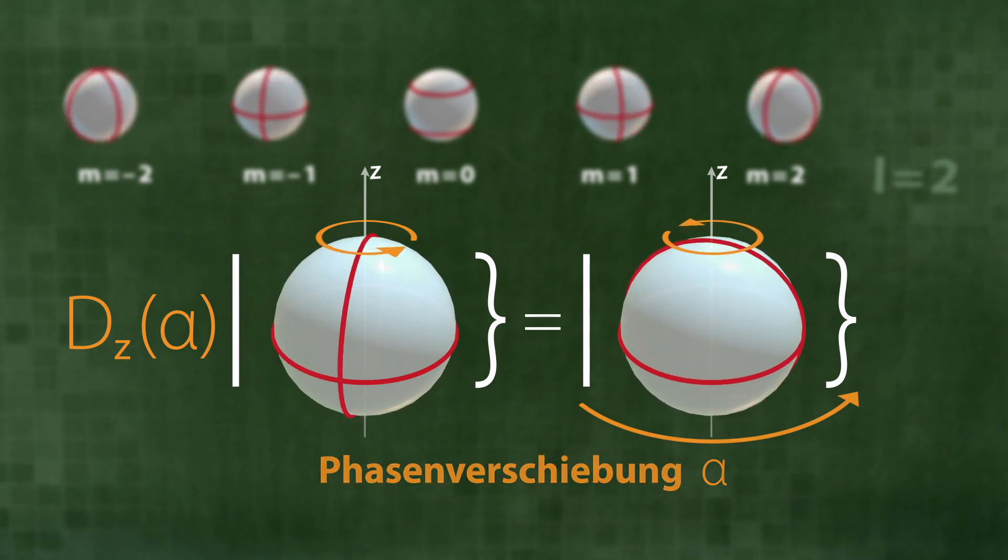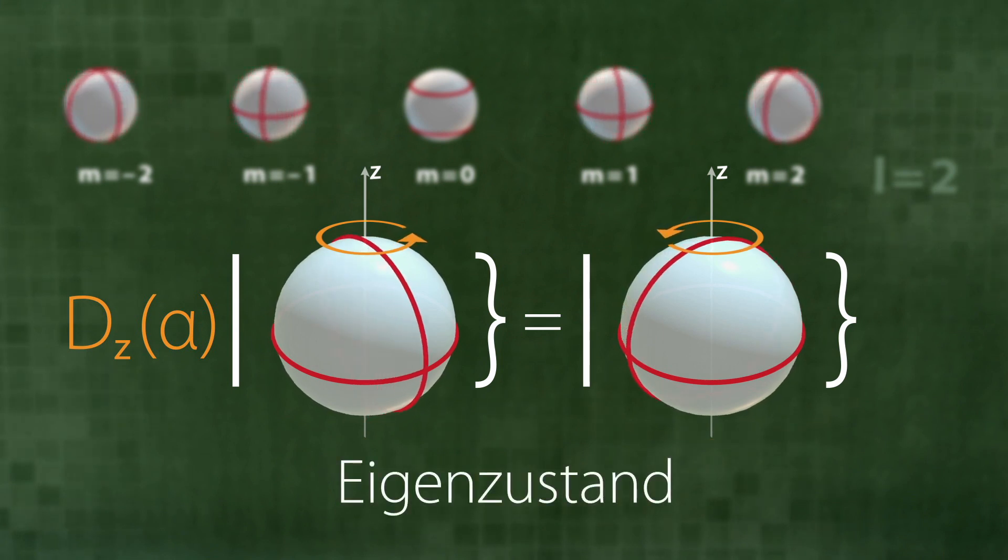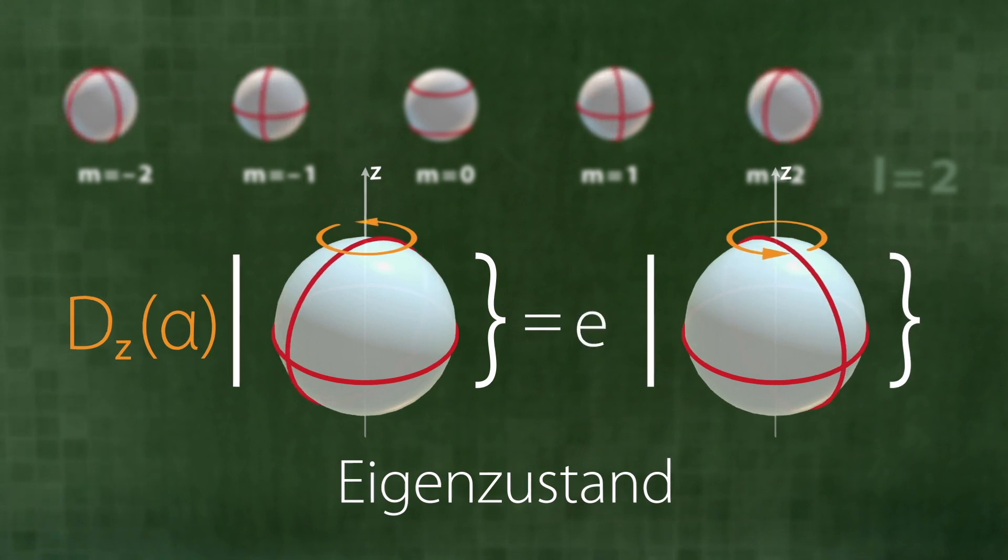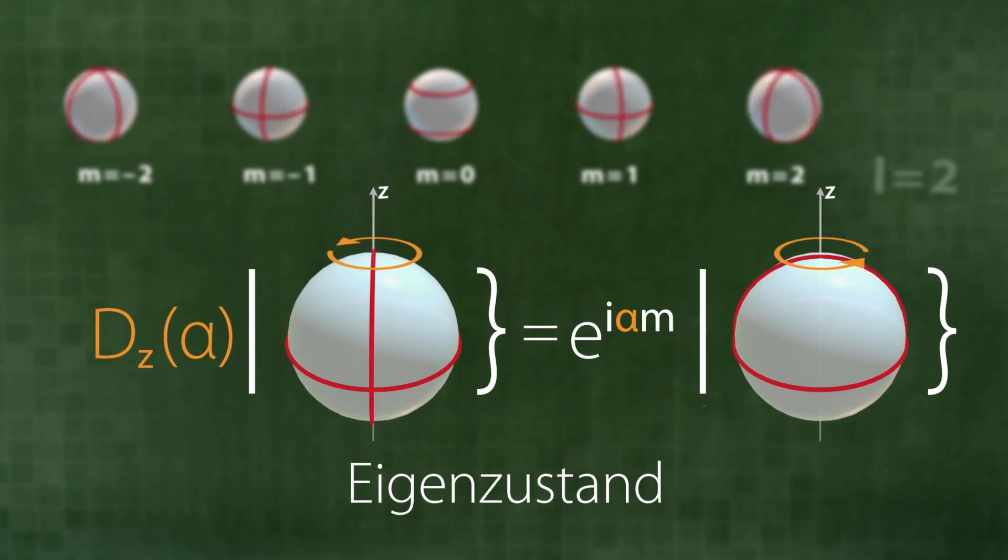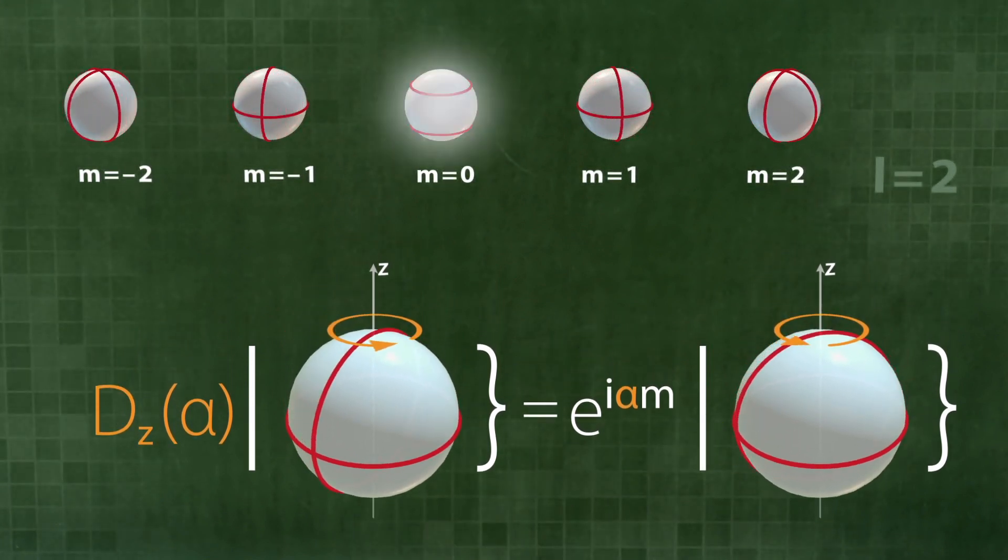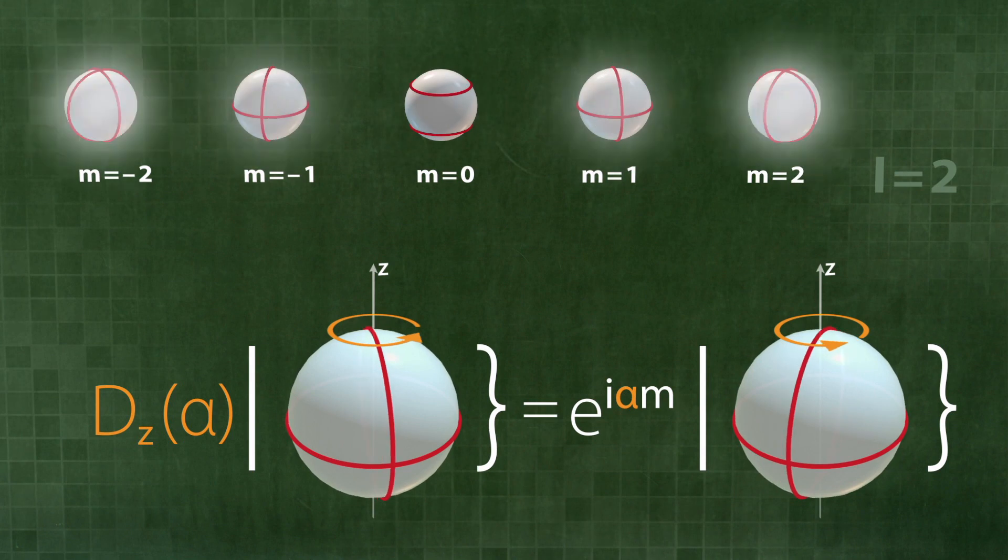This is another eigenstate of the operator Dz of alpha. For rotation by the angle alpha, the eigenvalue is e to the power of i alpha m. This is true for all M. All states shown here are thus eigenstates of the rotation operator about the z-axis.